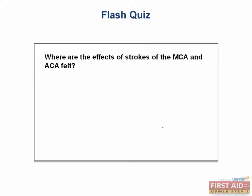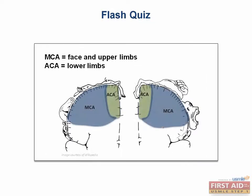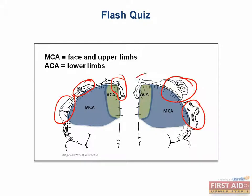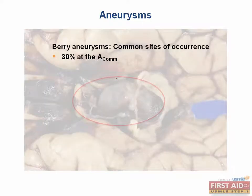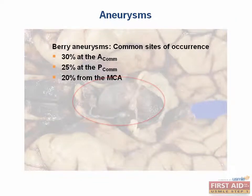Where are the effects of strokes of the MCA and the ACA felt? This leads us right back to our homunculus. An MCA stroke would impair the face and upper limbs, while the ACA impairs the lower limbs. About 30% of berry aneurysms occur at the anterior communicating artery, while 25% occur at the posterior communicating artery. Lastly, 20% occur at the middle cerebral artery.